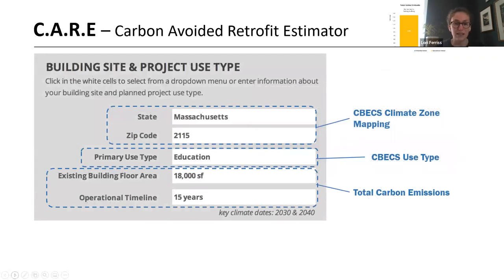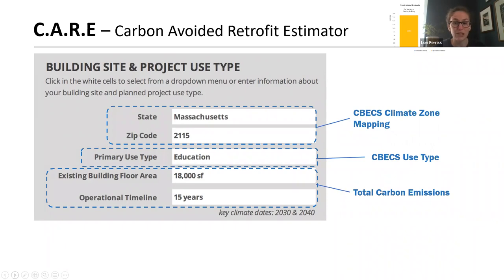We can look at how this enters into the calculator. First, we go to the general project information box, where you input the building's location, primary use type, and size. This queries the calculator's data to pull the climate zone, typical energy sources, grid mix emissions, and similar information, as well as the operational timeline. The operational timeline is a really important input because it defines the duration of the study. For example, if you wanted to evaluate a project against a 2030 reduction target, you could enter eight years — allowing you to look at only the critical timeframe that matters, rather than a whole-building life aperture.